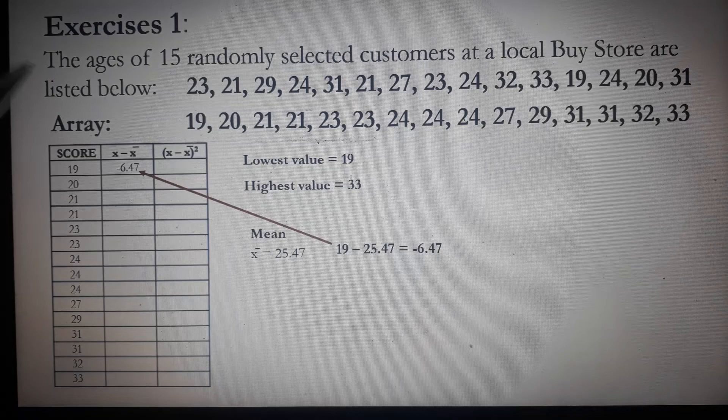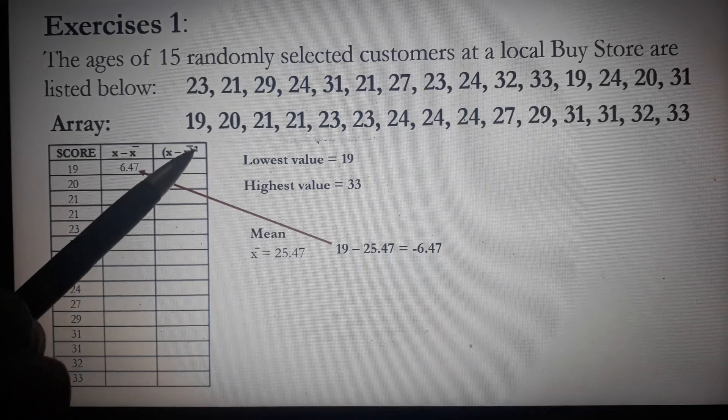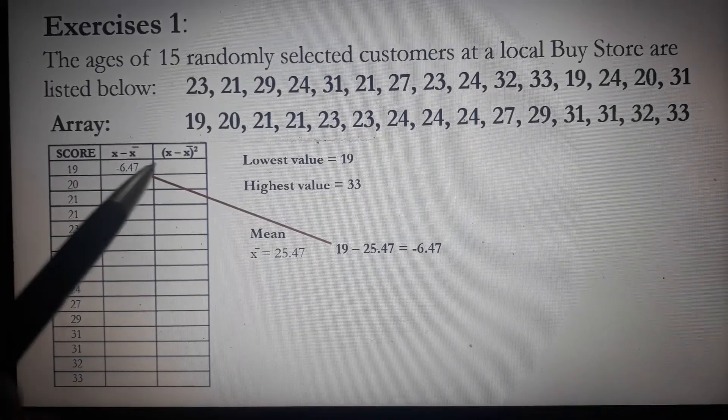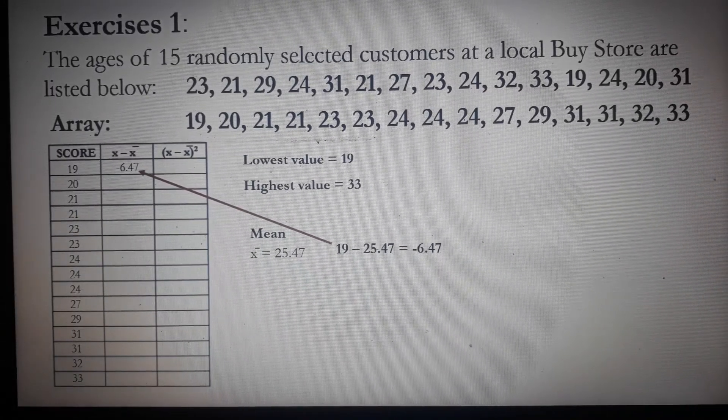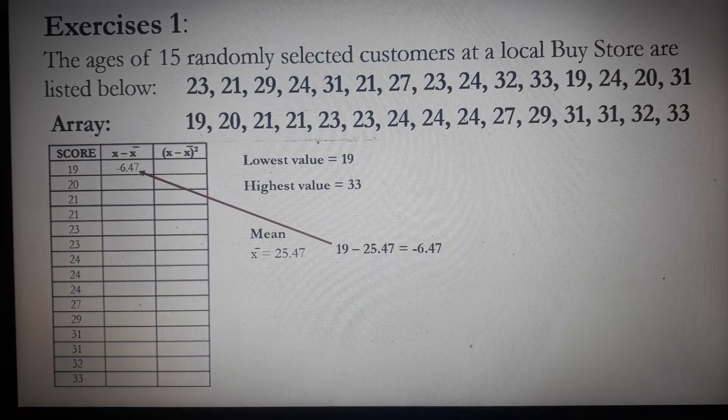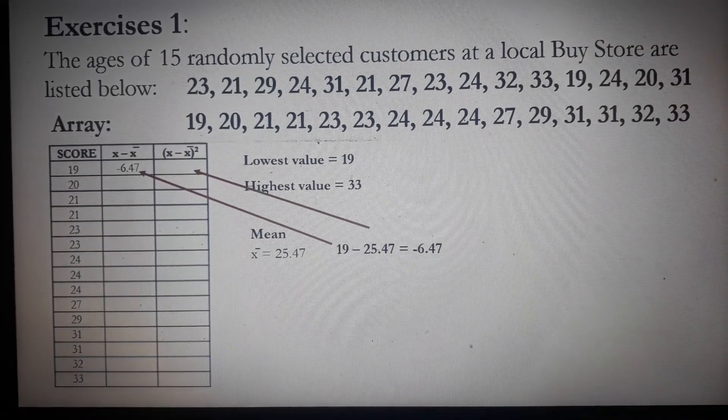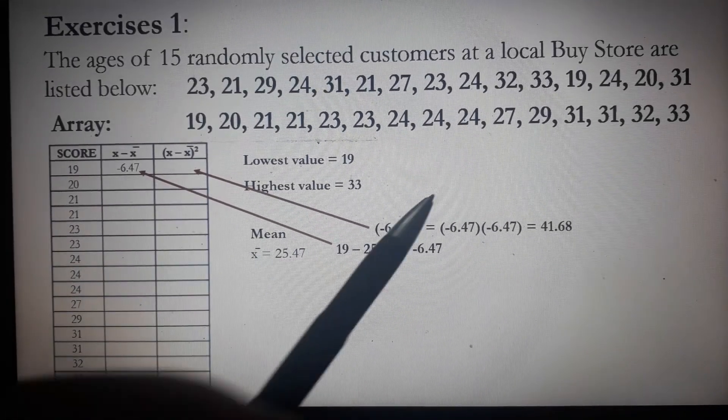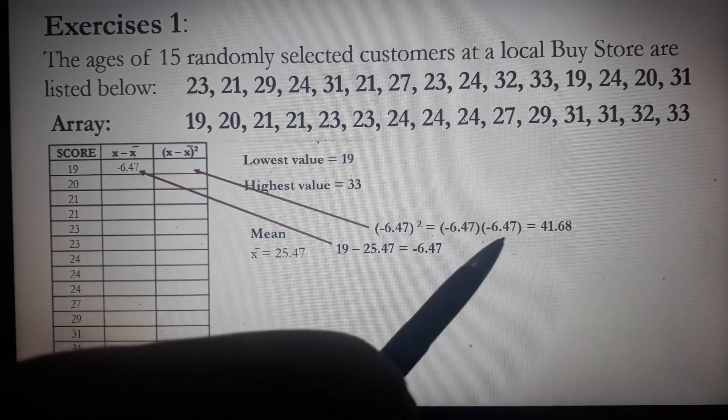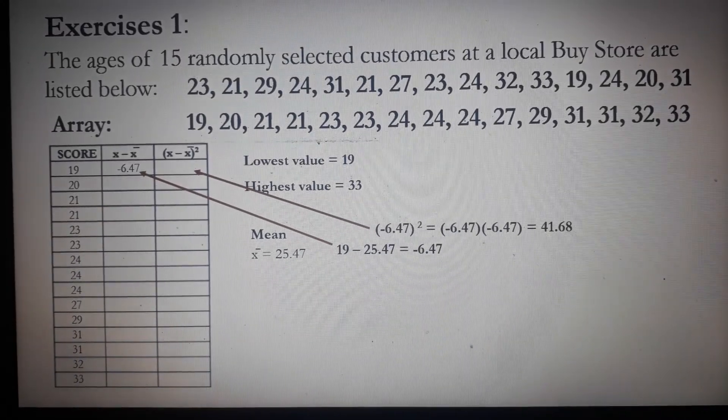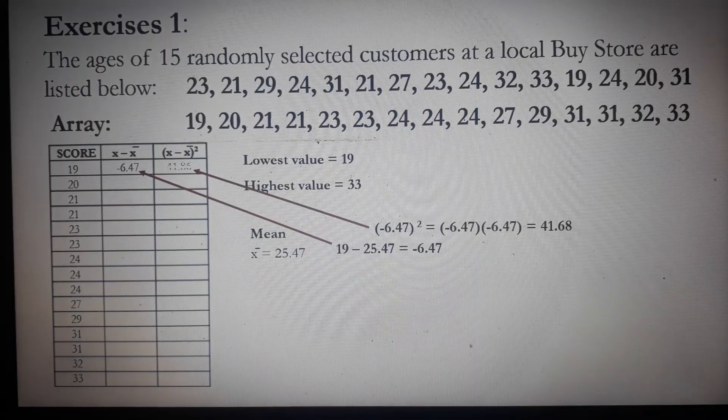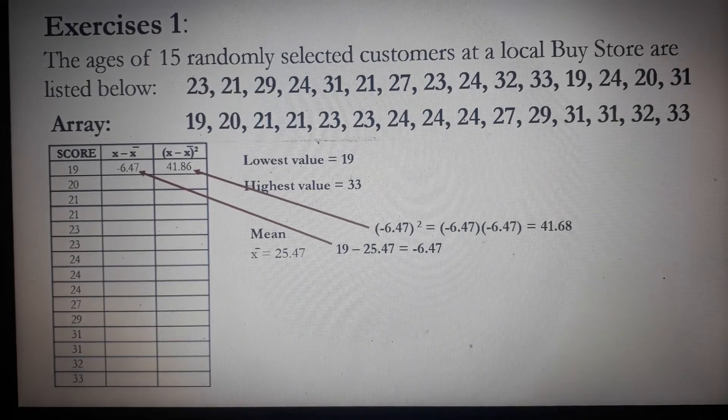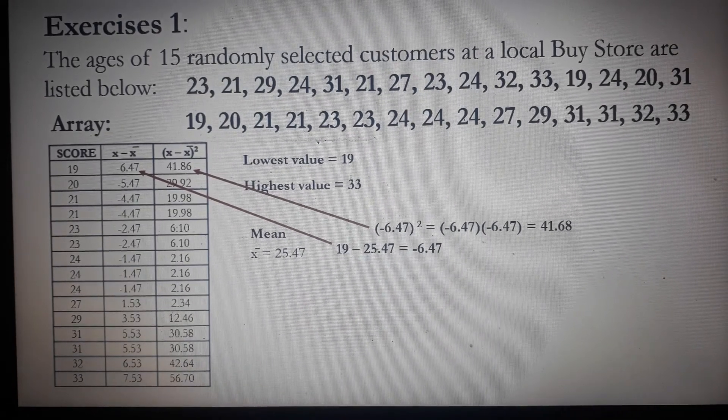Column 3 is labeled as X minus mean squared. It's simply the square of the values on the second column. So for our first entry, square the negative 6.47, or it's negative 6.47 times negative 6.47. The result is 41.68. That's how we complete our table.